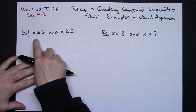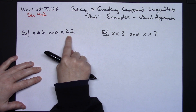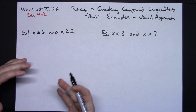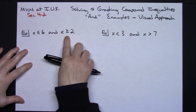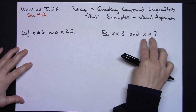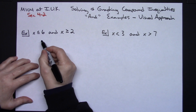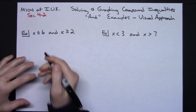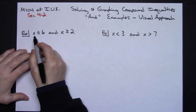Let's say we've got x is less than or equal to 6 AND x is greater than or equal to 2. I want to know what the solution is here. Since these are already solved — simple little inequalities — I can put each of them on a separate number line and then look to see what part overlaps.